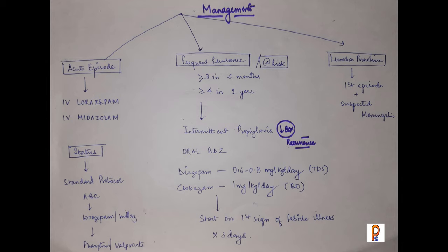If a child has frequent recurrences — more than three episodes in six months or four episodes in a year — we put the child on intermittent prophylaxis using oral benzodiazepines: diazepam at 0.6 to 0.8 mg per kg per day, or clobazam at 1 mg per kg per day. We start these from the day fever begins and continue them. Intermittent prophylaxis can reduce recurrences by 80%.